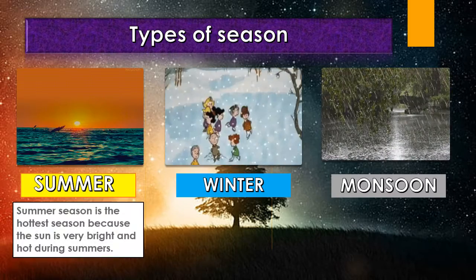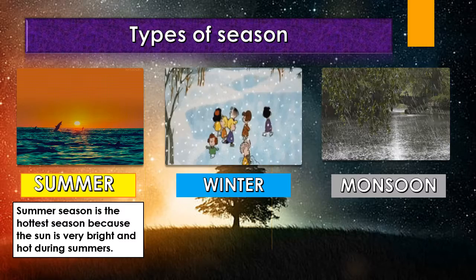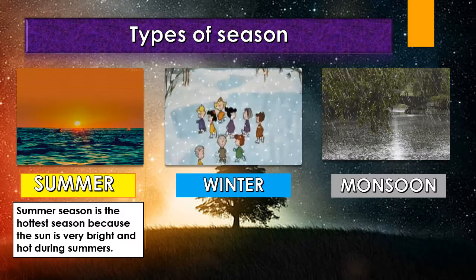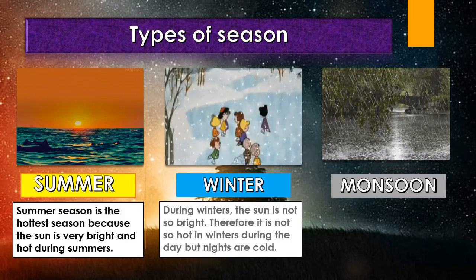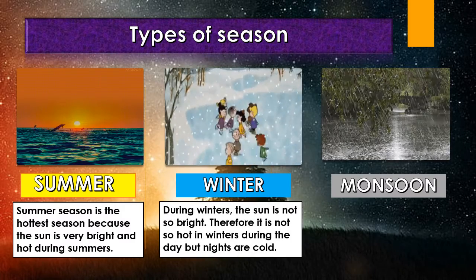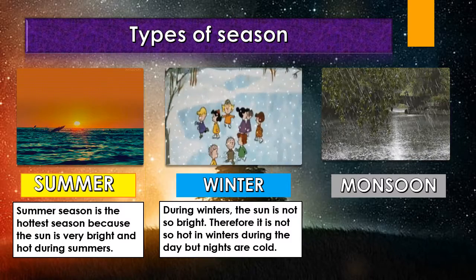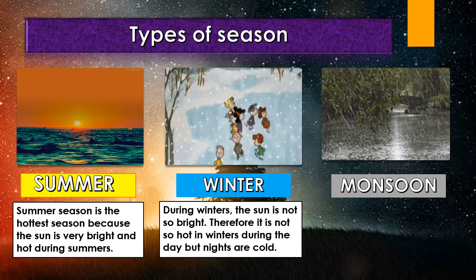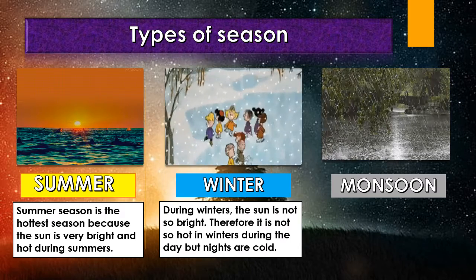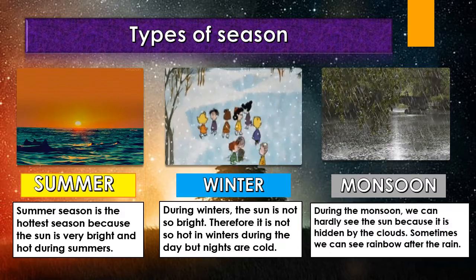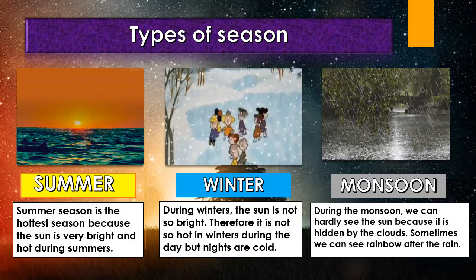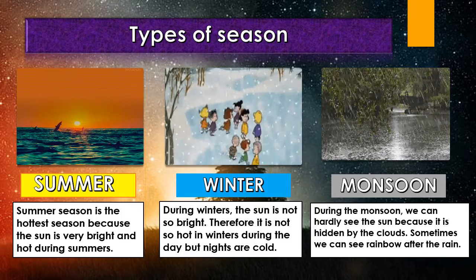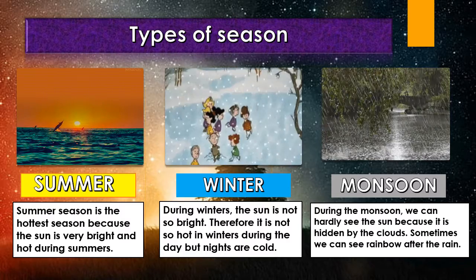Summer season is the hottest season because the sun is very bright and hot during summer. In winter, the sun is not so bright, and therefore it is not so hot. During the day it is manageable, but at night it is cold. In monsoon, we can hardly see the sun because it is hidden by the clouds. Sometimes we can see the rainbow after the rain.